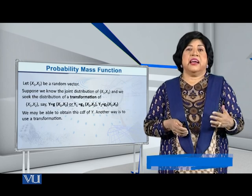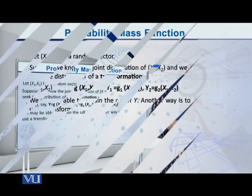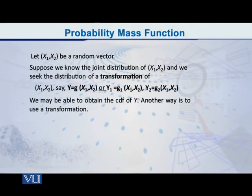Let X1, X2 be a random vector and let us suppose that we know the joint distribution of X1, X2 and we seek the distribution of a transformation of X1, X2. That is, we want to say Y is equal to g of X1, X2.